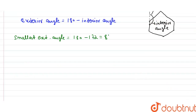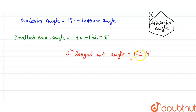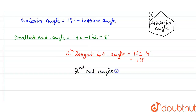The second largest interior angle is 172 minus 4 degrees, which equals 168 degrees. The corresponding second smallest exterior angle is 180 minus 168 degrees, which equals 12 degrees. We can also verify: 8 plus 4 is also 12 degrees.